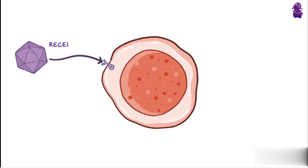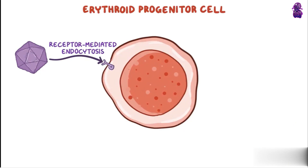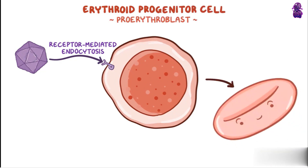Once there, Parvovirus B19 uses receptor-mediated endocytosis to enter erythroid progenitor cells, also called proerythroblasts — the early cells that eventually become red blood cells. It then uses these cells' DNA replication machinery in the nucleus to replicate its DNA and assemble new copies of the virus.